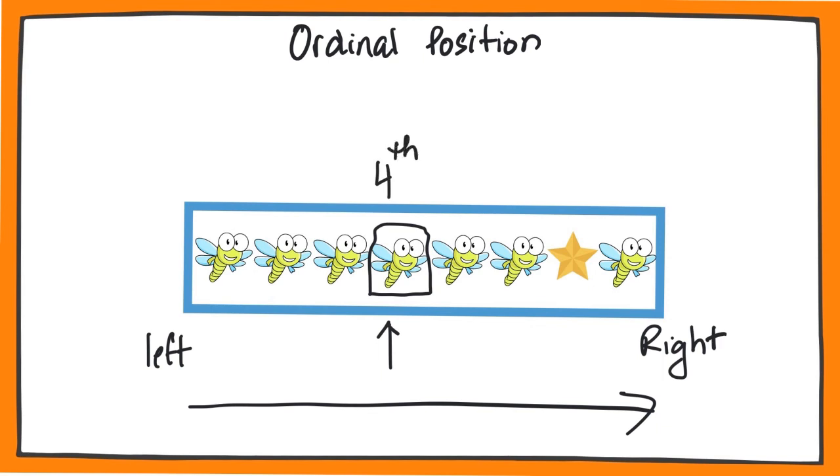What about the star? What is the ordinal position of the star? Let us count again, starting from the left. First, second, third, fourth, fifth, sixth, and seventh. So, the star is located in the seventh position.